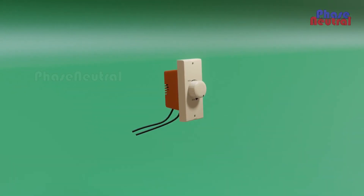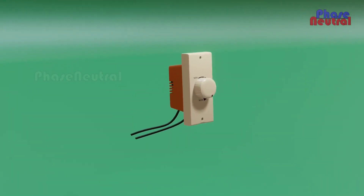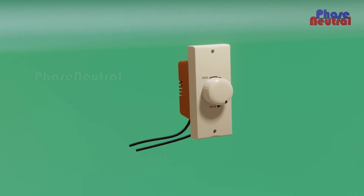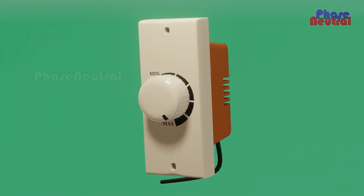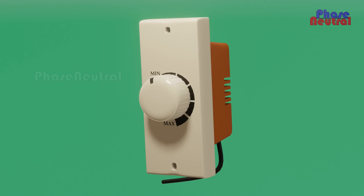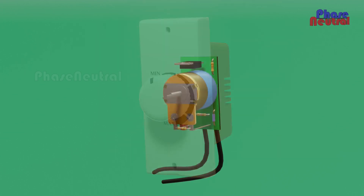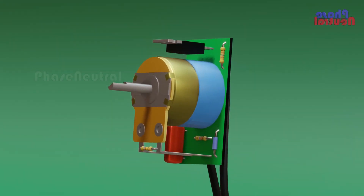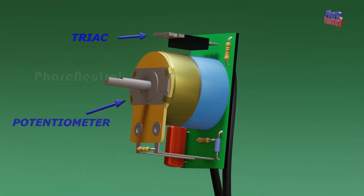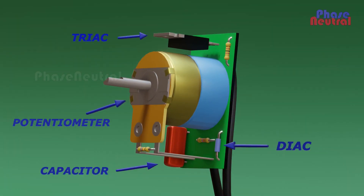The movable type electronic fan regulator has a smooth knob which lets you change the speed of the fan very smoothly, and there are no step numbers provided on it. The inside parts of the movable type electronic fan regulator are a potentiometer, triac, diac, capacitor, and resistors.